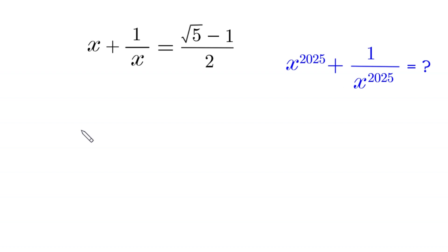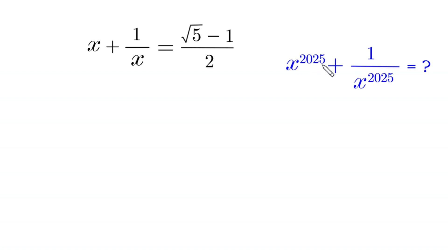Hello everyone, welcome to how to solve this very nice algebra equation. x plus 1 over x is equal to (√5 minus 1) over 2. Our job is to find x to the power 2025 plus 1 over x to the power 2025.